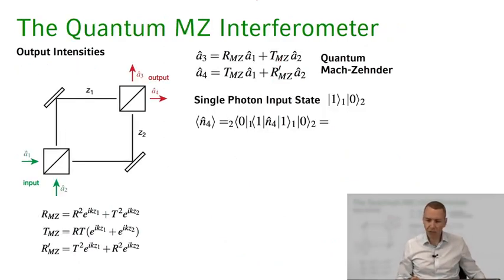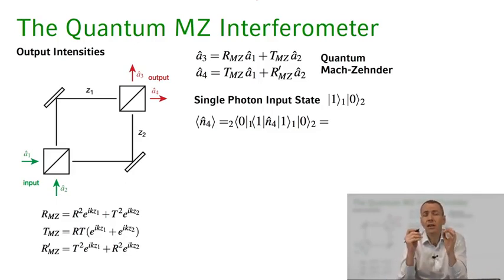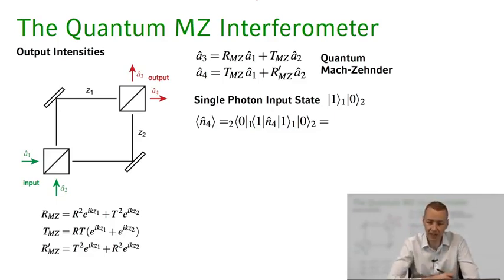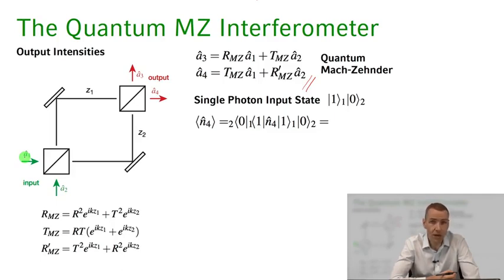Now let's turn to the more interesting quantum situation. We can discuss this for any quantum state impinging onto the Mach-Zehnder interferometer. Just as for the beam splitter, we relate the annihilation operators of the input fields to those of the output fields through the same generalized Mach-Zehnder coefficients. We can now input any quantum state and calculate the output state. For example, we can take a single photon state on port 1, vacuum on port 2, and ask what is the average photon number measured on port 4.